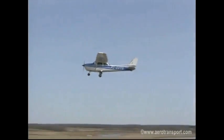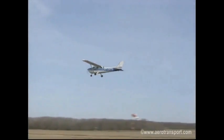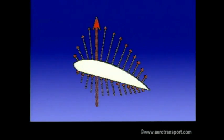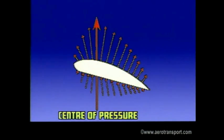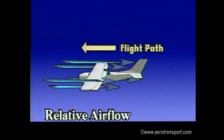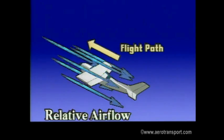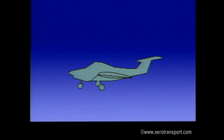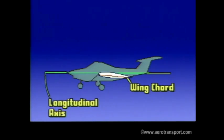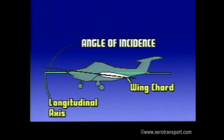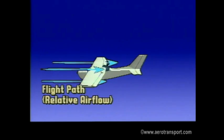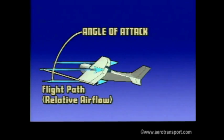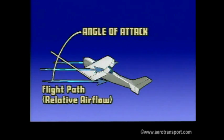Like weight, lift is calculated through a single point. It is located on the wing and is called the center of pressure. There are several observations we can make about lift, but first, some definitions. Relative airflow is always parallel to and opposite the flight path of the aircraft. The angle of incidence is measured between the plane of the wing chord and the longitudinal axis of the aircraft. The angle of attack is the angle between the wing chord and the relative airflow.